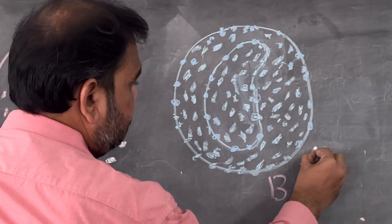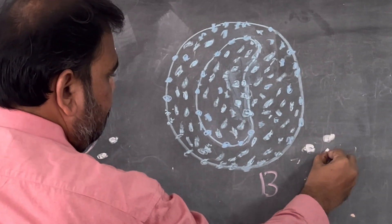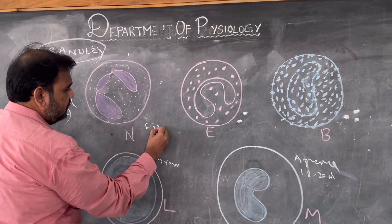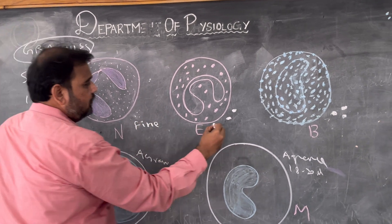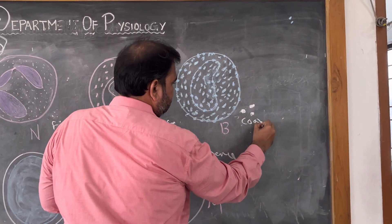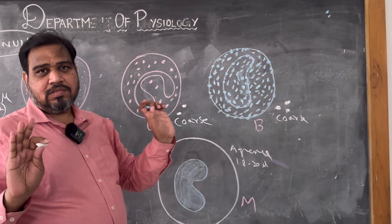Whereas here in eosinophil note it down, the granules are coarse. You can see the diagram. In basophil also the granules are coarse. I again repeat: in neutrophil the granules are fine, F-I-N-E. In eosinophil the granules are coarse, that means thick. Basophil also the granules are coarse, so the thickness of the granules I explained.